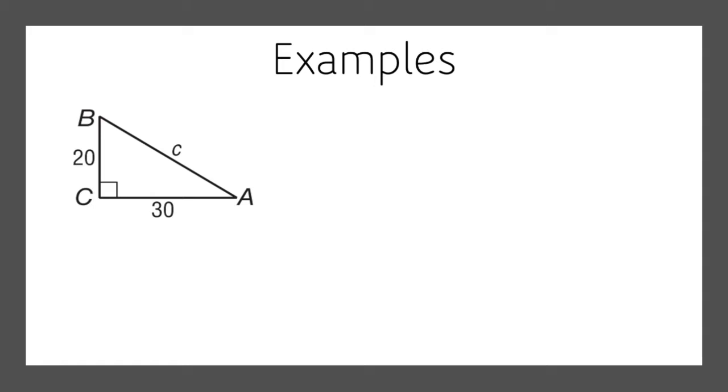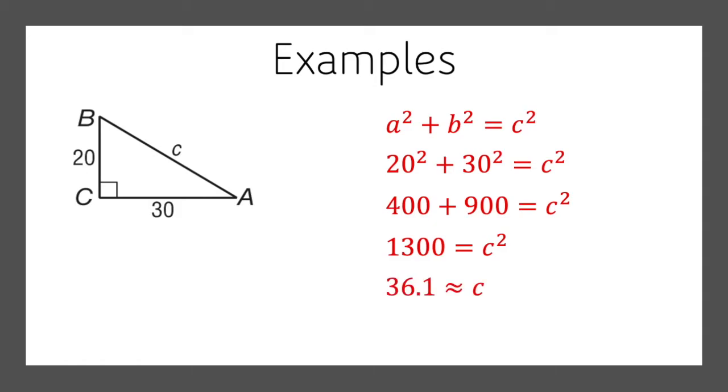This time we're shopping for the hypotenuse. We're missing c. So we know the two legs are 20 and 30. So 20 squared plus 30 squared will equal the hypotenuse squared. 400 plus 900 is 1,300 equals c squared. Take the square root of both sides, and c equals about 36.1.